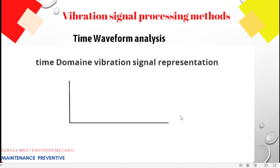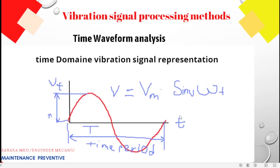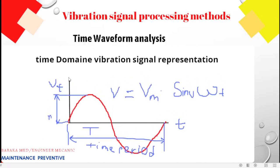This shows how we measure the time domain vibration signal. This is the time waveform domain. The formula for velocity is: velocity equals displacement times omega times t.